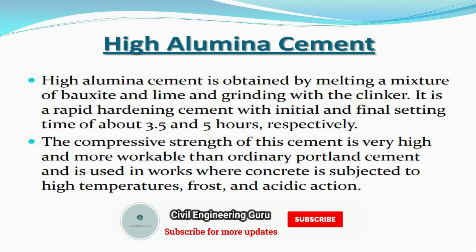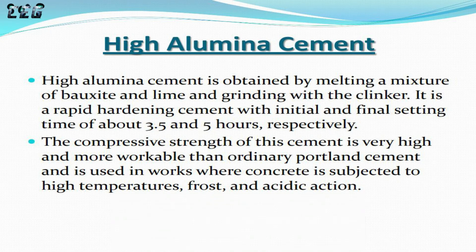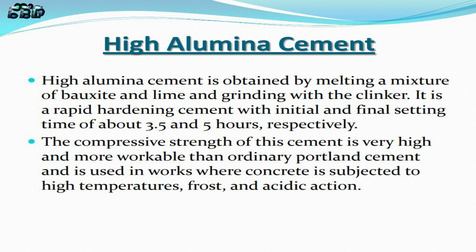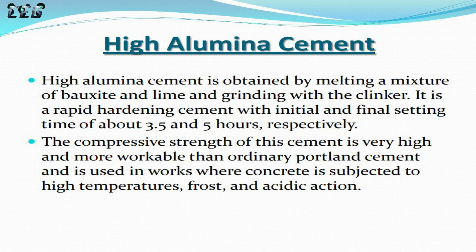High Alumina Cement is obtained by melting a mixture of bauxite and lime and grinding with the clinker. It is a rapid hardening cement with initial and final setting times of about 3.5 and 5 hours respectively. The compressive strength of this cement is very high and more workable than Ordinary Portland Cement, and is used in works where concrete is subjected to high temperatures, frost, and acidic action.